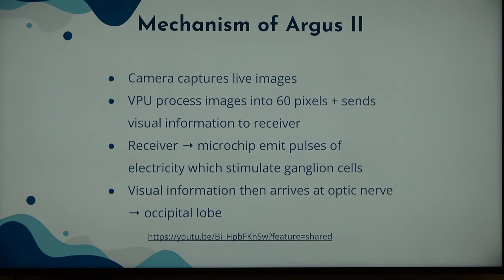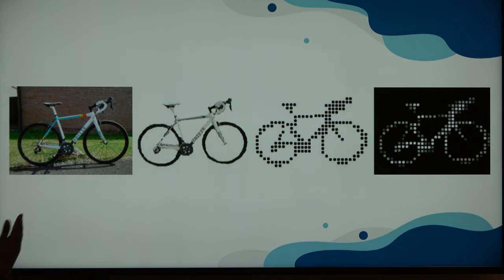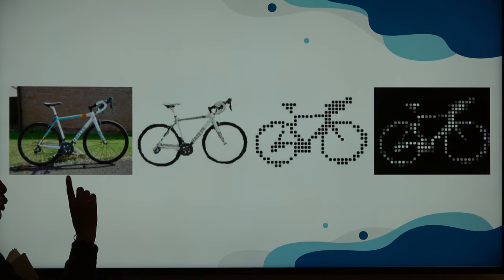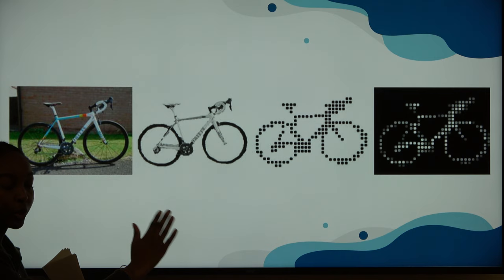There's a little summary video, but for time I can't show it. Here is a visual summary of everything I just said. Let's say the person wearing the implant sees a bike — this is how the bike looks to us. The visual processing unit will simplify it into a black and white pixelated image of 60 pixels only, and that is what the person will see.